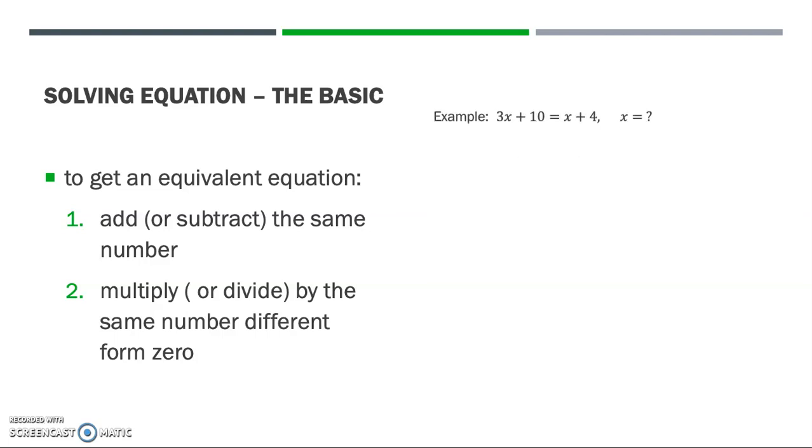For example, we have 3x + 10 = x + 4. So what is the value of x that satisfies this equality? The first step is we subtract the same number. Here we want to isolate the x, so we subtract x from both sides and this is what we get. The second step, we subtract 10 from both sides. So this is the result.